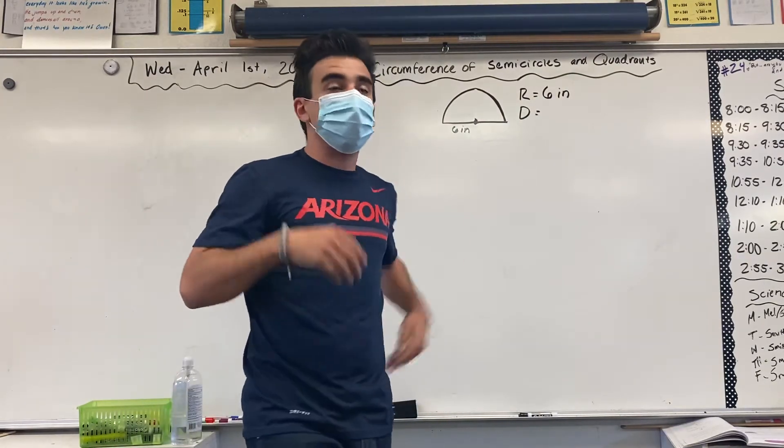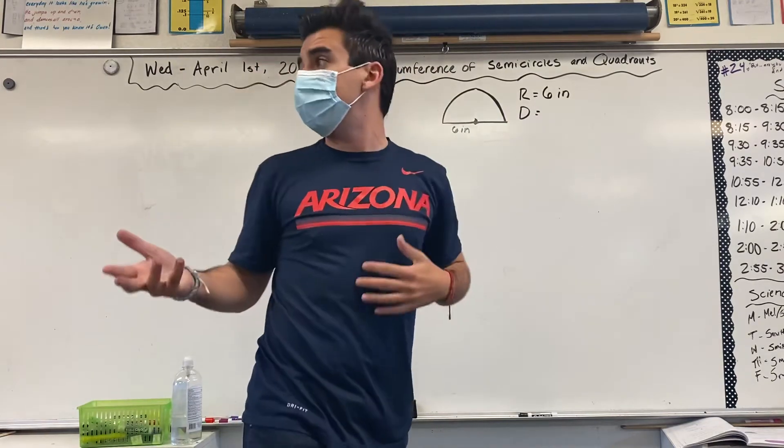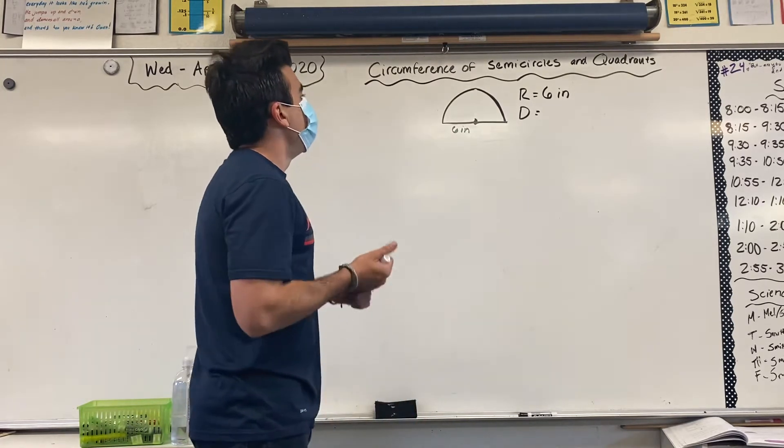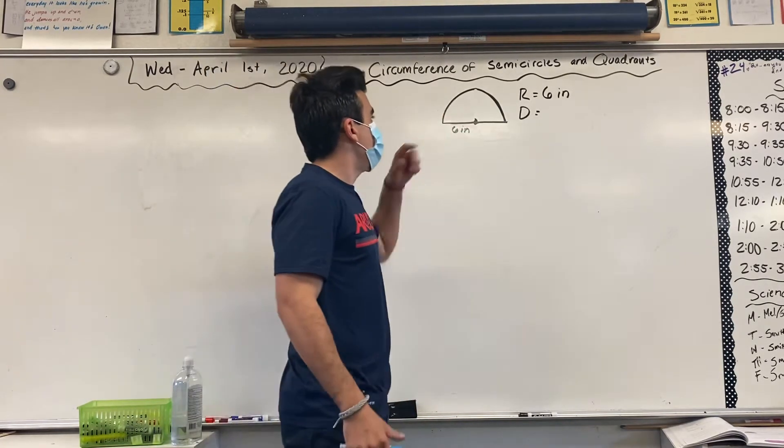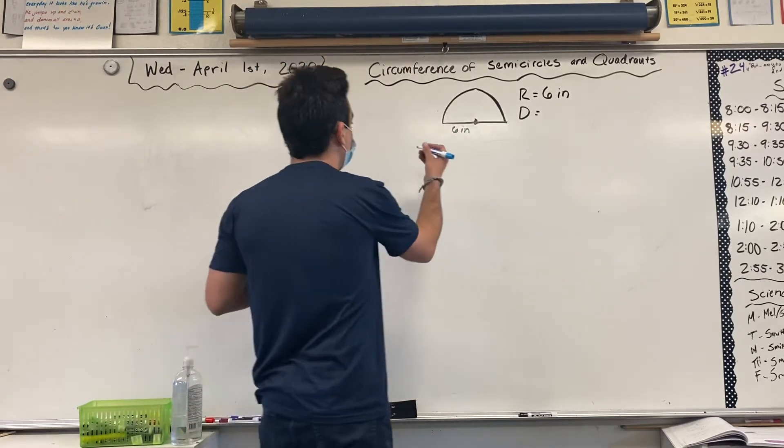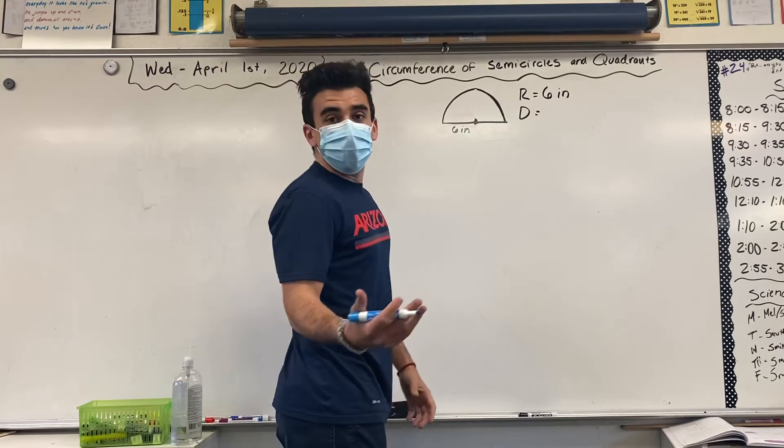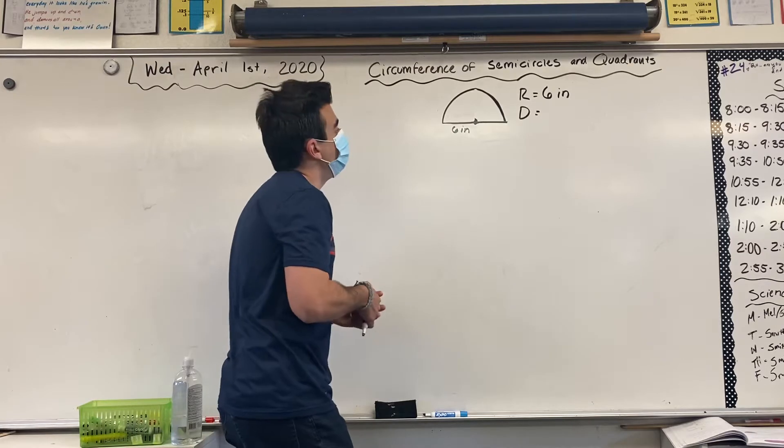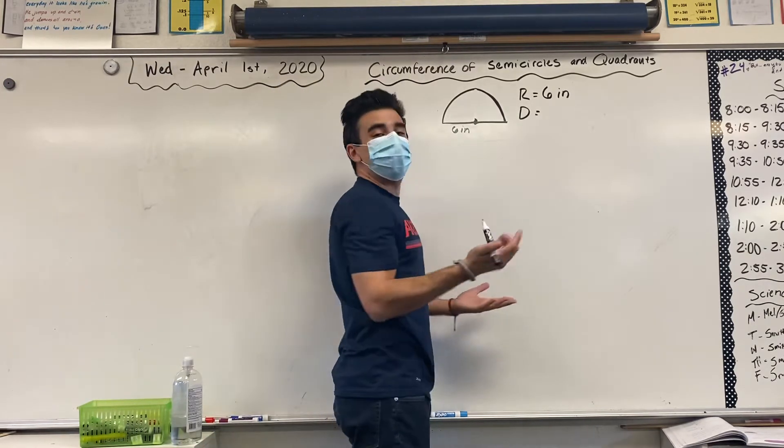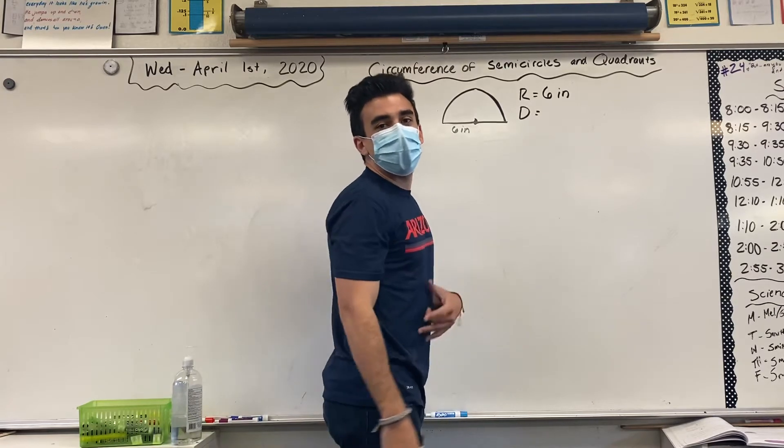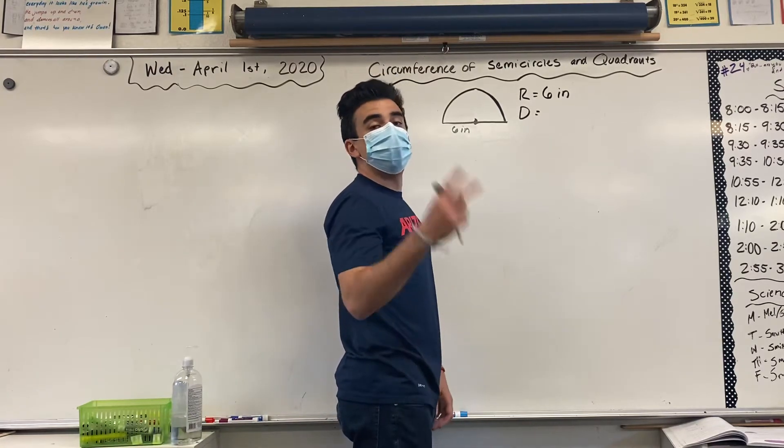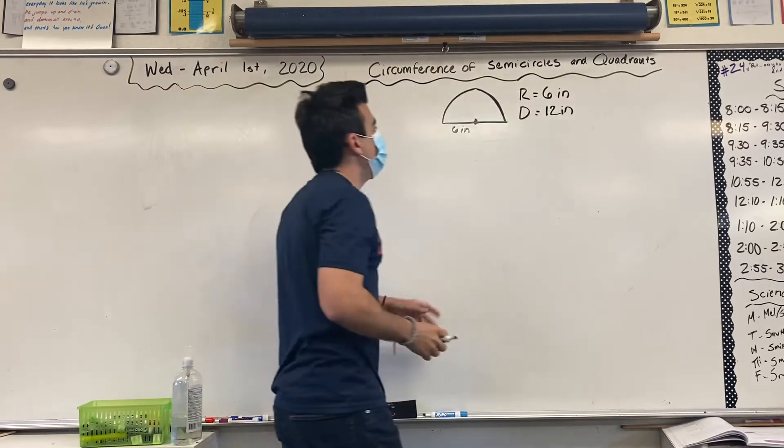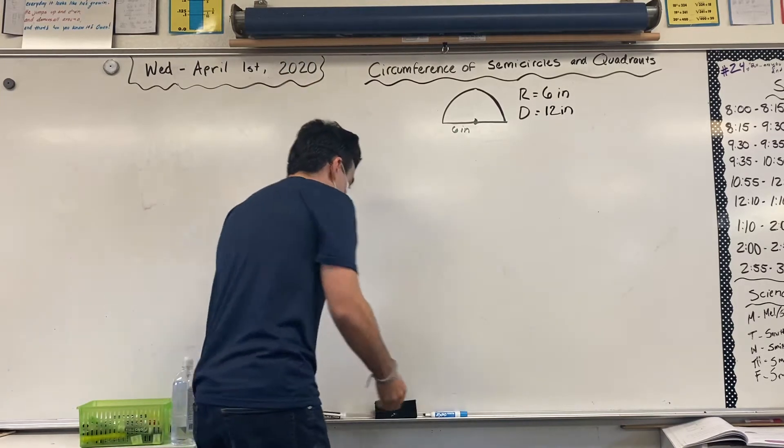Today, we are going to do what we did Monday. We're going to carry it over, except we're going to use the 22 over 7 method. First things first, we are working with a semicircle. Those two steps that we added last time are going to be used again, and we'll get to that in a second, but I noticed we don't have a diameter. We have a radius. Remember, just multiply by 2. Radius is half your diameter, so diameter is your radius two times. 6 times 2 is 12 inches.